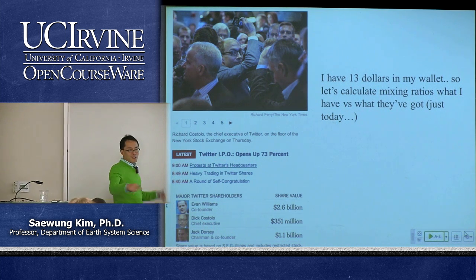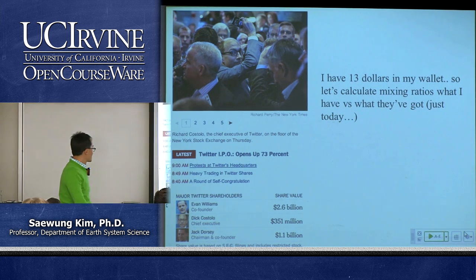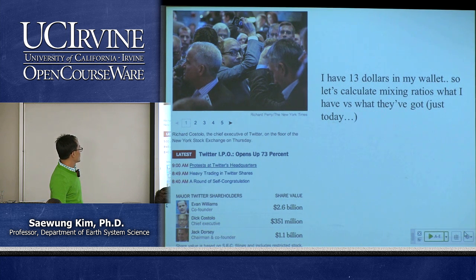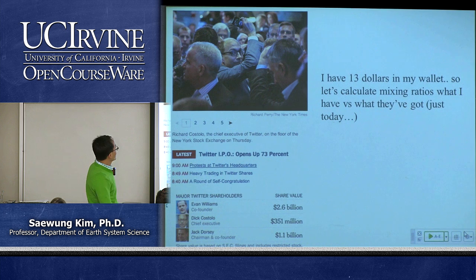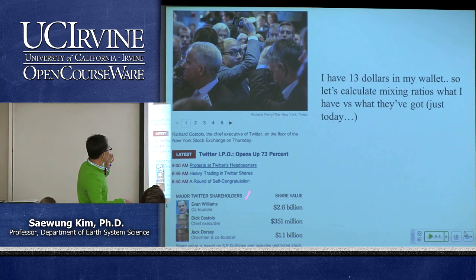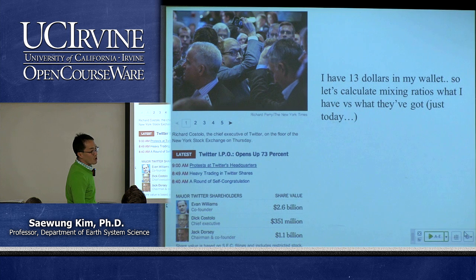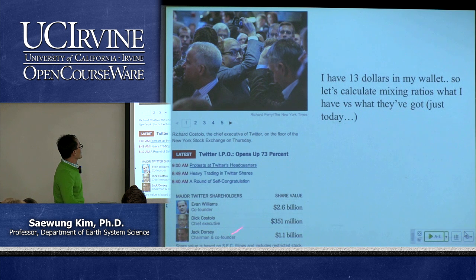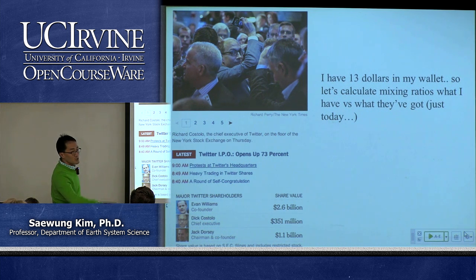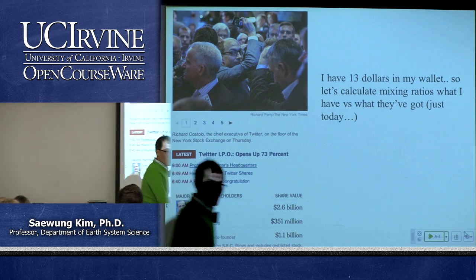These are three big guys at Twitter: Evan Williams, Richard Costello, and Jack Dorsey. This smiley guy right here — just today from the stock market, he got $351 million from this stock deal. This was captured from today's New York Times around 9 a.m. I opened my wallet and I have $13.